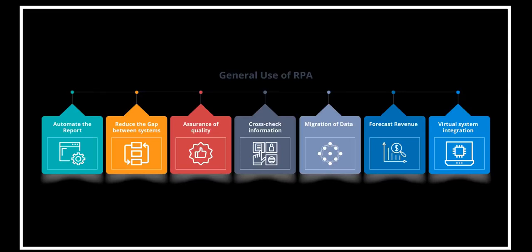RPA also provides assurance of quality. Once you have defined what the robot has to do in a process, they will do it the same way every time without making mistakes. They can also cross-check information, help in migration of data from one place to another — for example, from Excel to a database — be used for forecasting revenues of an organization across different business units, and help with virtual system integration.